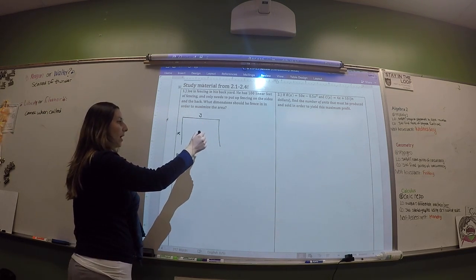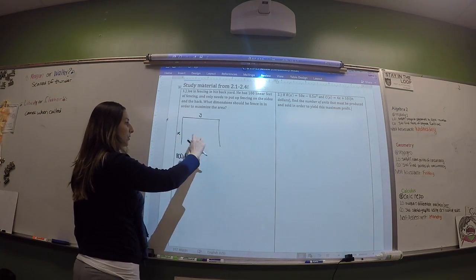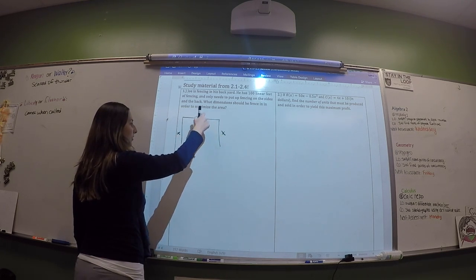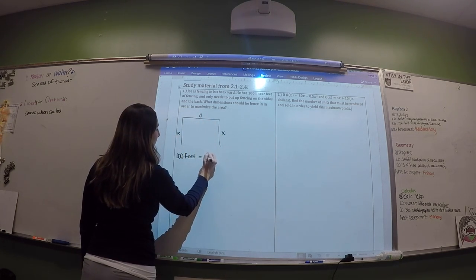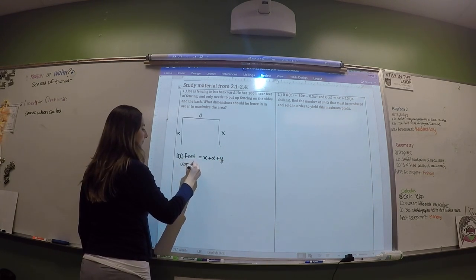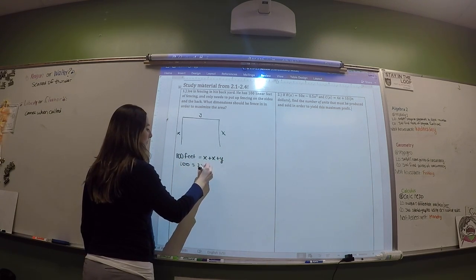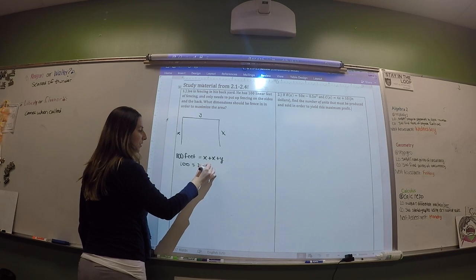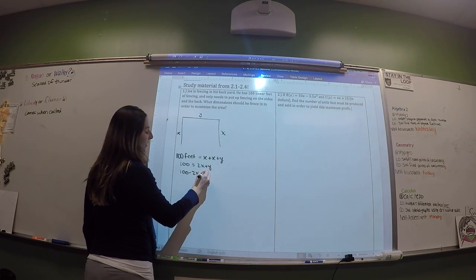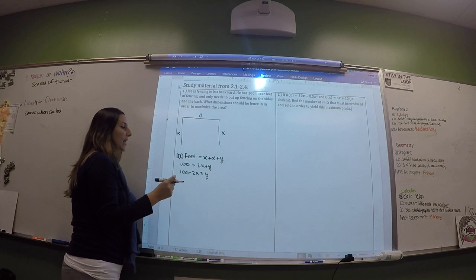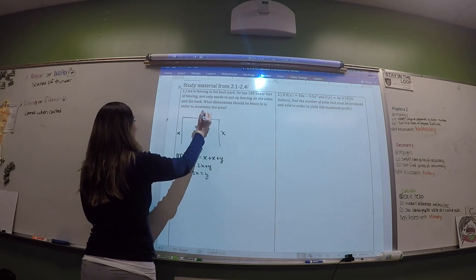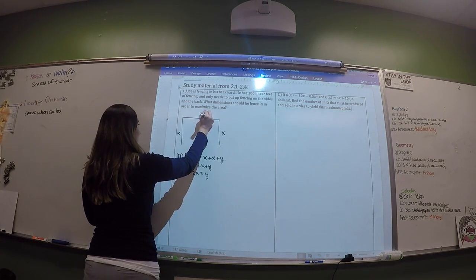Normally perimeter would be 2X plus 2Y, but we don't have a full perimeter here — we only fence three sides. So we're just going to do X plus X plus Y equals 100. That gives us 2X plus Y equals 100. We're going to solve this for Y so that we have the area in terms of X only.